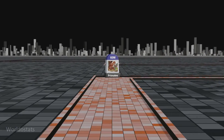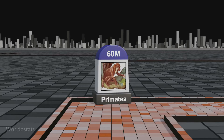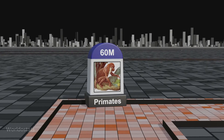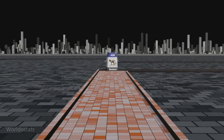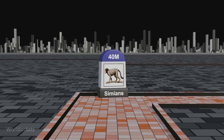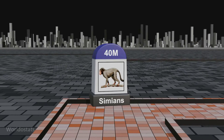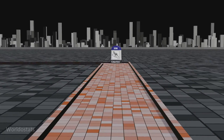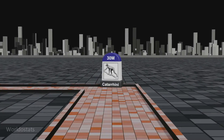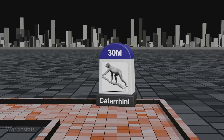60 million years ago, primates underwent a divergence into two suborders: Strepsirrhini, characterized by wet noses, and Haplorrhini, distinguished by dry noses. Simians, a subgroup of primates including monkeys and apes, underwent evolutionary developments approximately 40 million years ago. Catarrhini, a parvorder of primates comprising old-world monkeys and apes, experienced evolutionary changes around 30 million years ago.